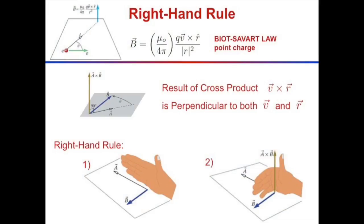The result of the cross product is perpendicular to both v and r, and it points in the direction of the right-hand rule.